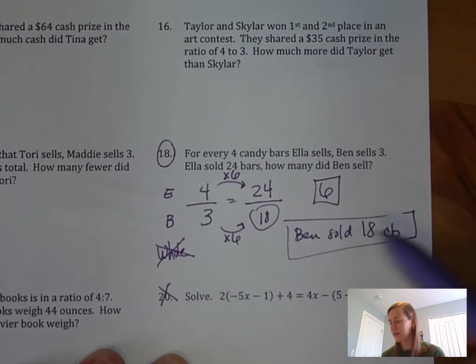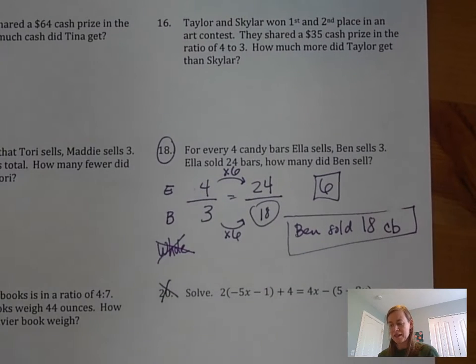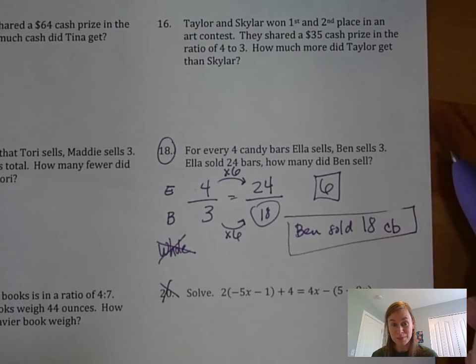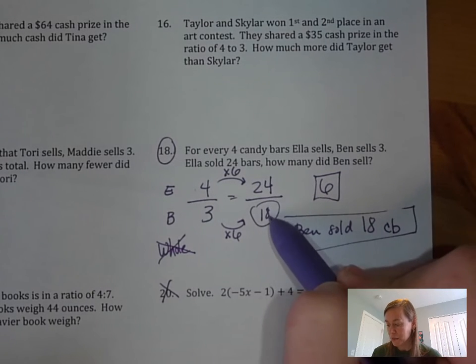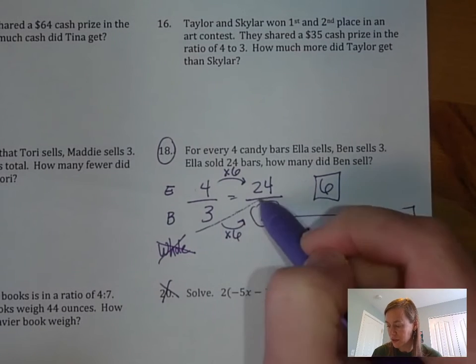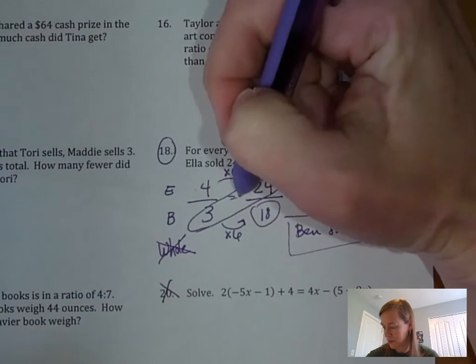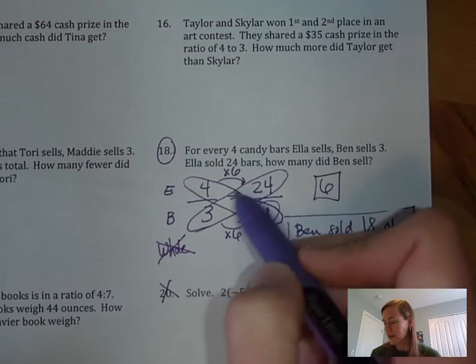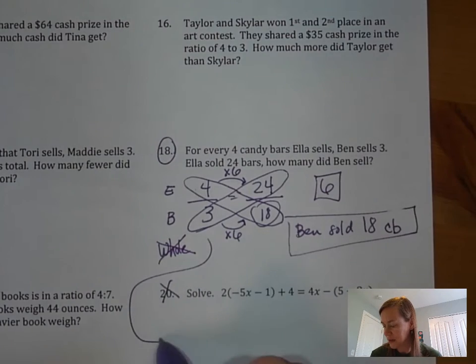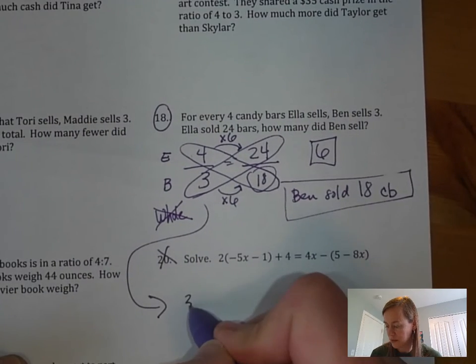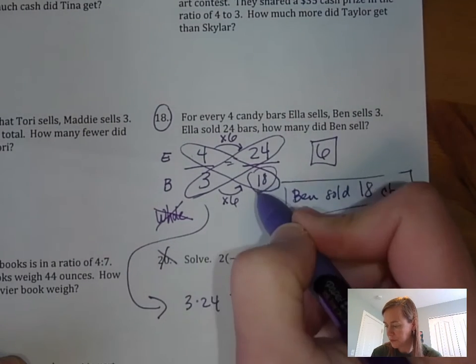Now what if you didn't want to use your scale factor? What's the other method you could use? You could totally cross multiply here, right? So you would probably put an X here inside the circle, and then you draw your butterfly circles like this. Then you would have 3 times 24 equals 4 times X, because remember we don't know it's 18 yet, we're trying to solve it again.